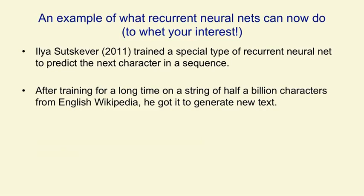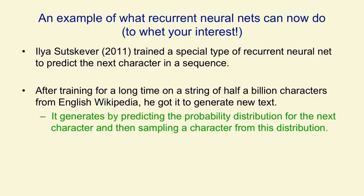Ilya trained it on lots and lots of strings from English Wikipedia. It's seeing English characters and trying to predict the next English character. He actually used 86 different characters to allow for punctuation, digits, capital letters, and so on. After he trained it, one way of seeing how well it can do is to see whether it assigns high probability to the next character that actually occurs. Another way is to get it to generate text — you give it a string of characters, get it to predict probabilities for the next character, then pick the next character from that probability distribution. It's no use picking the most likely character; if you do that, after a while it starts saying 'the United States of the United States of the United States.' But if you pick from the probability distribution, you see much more about what it's learned.